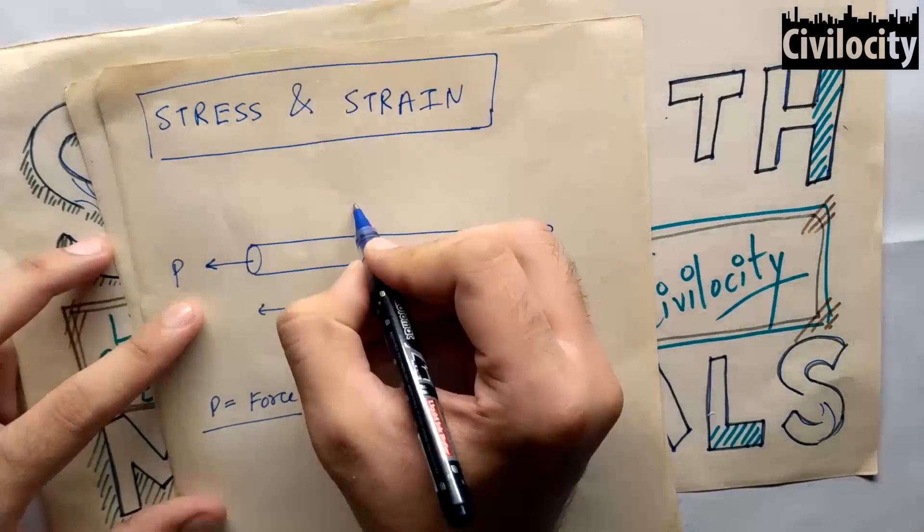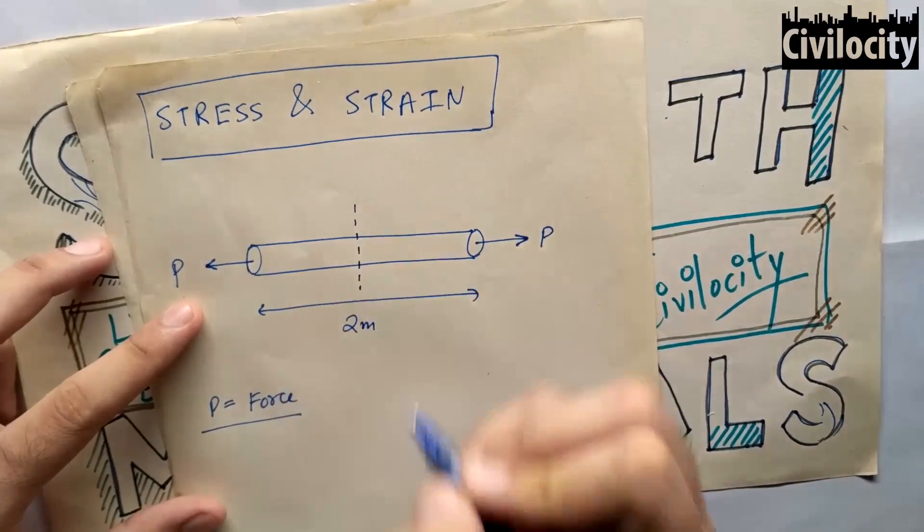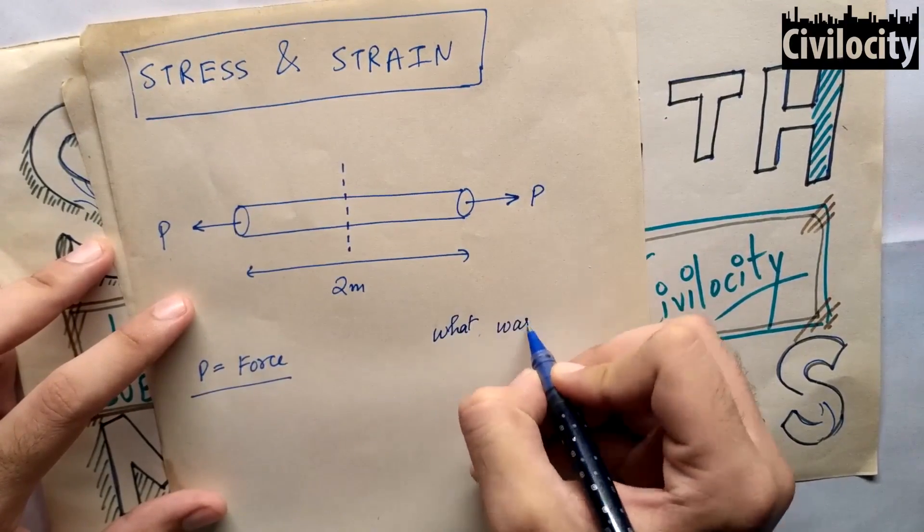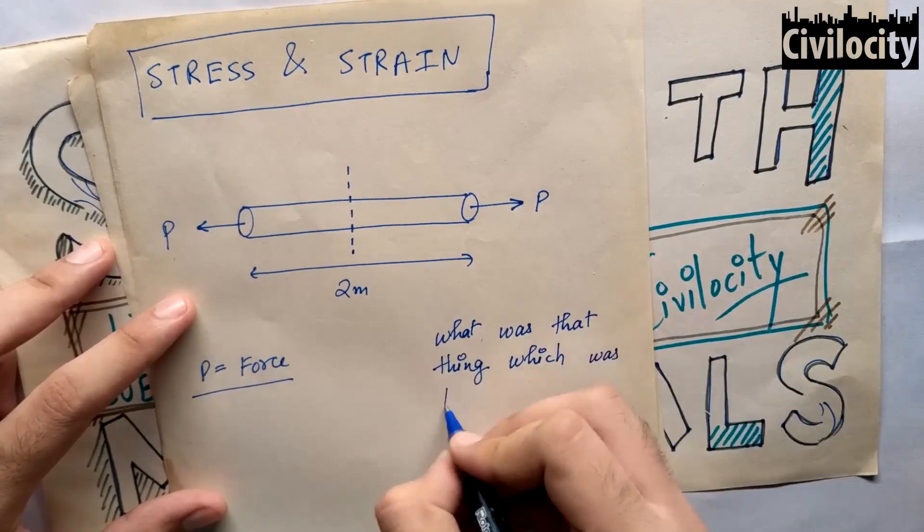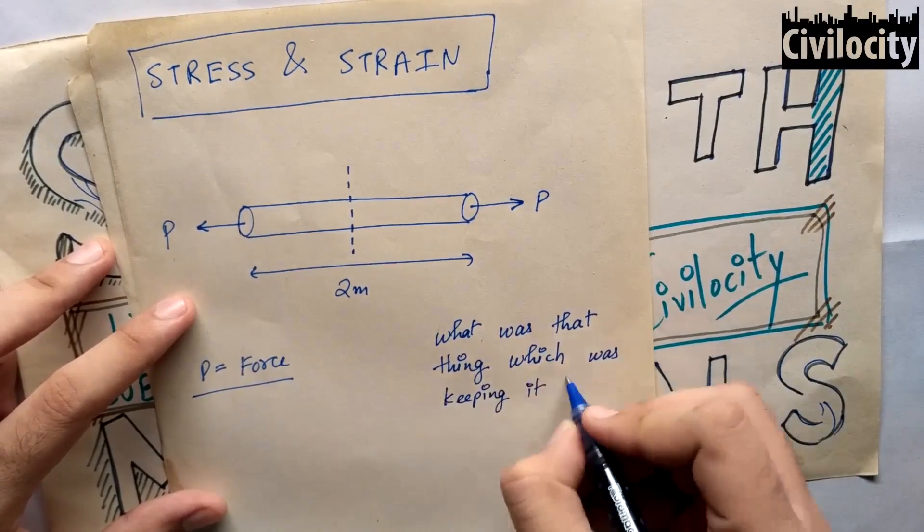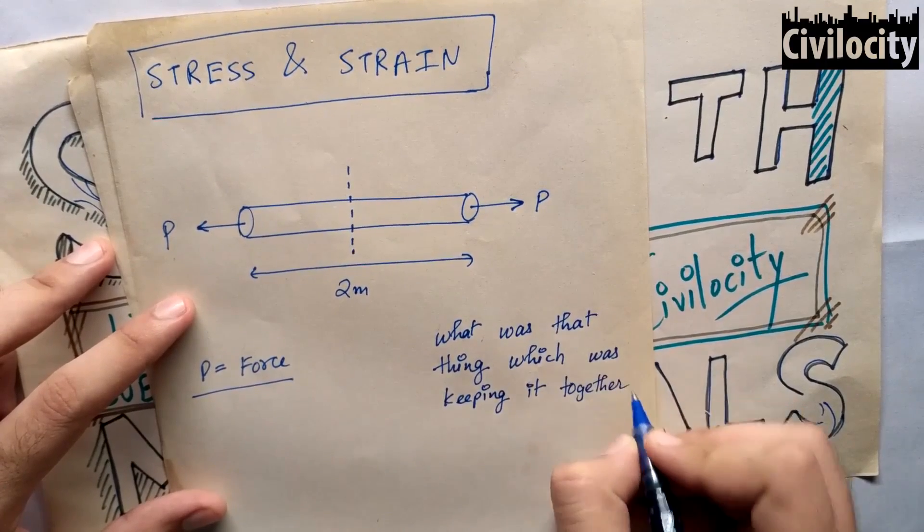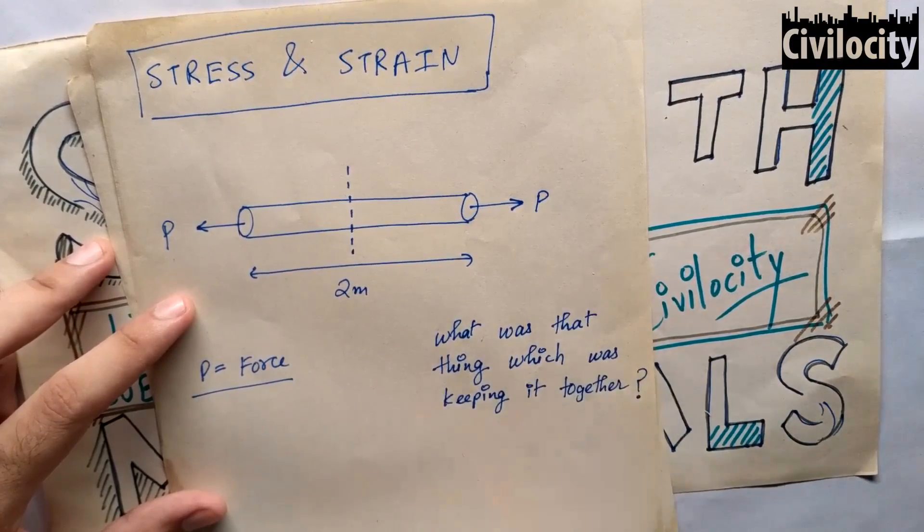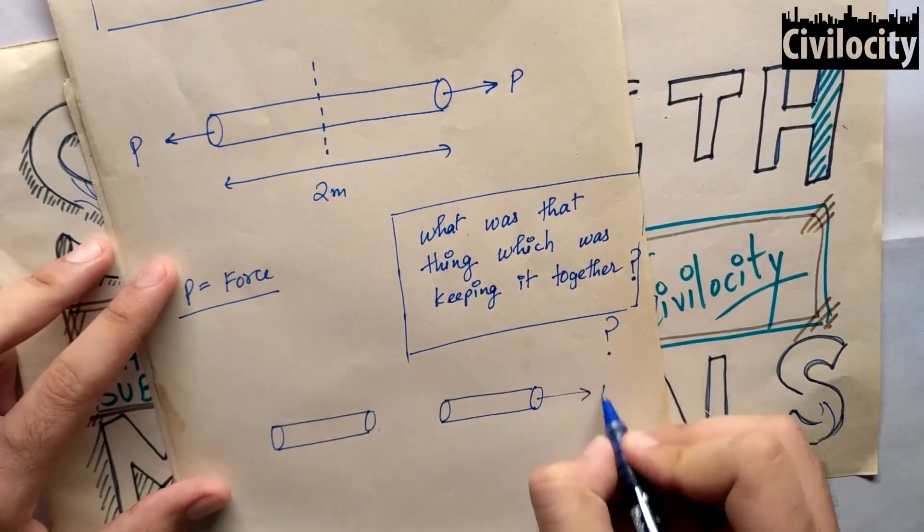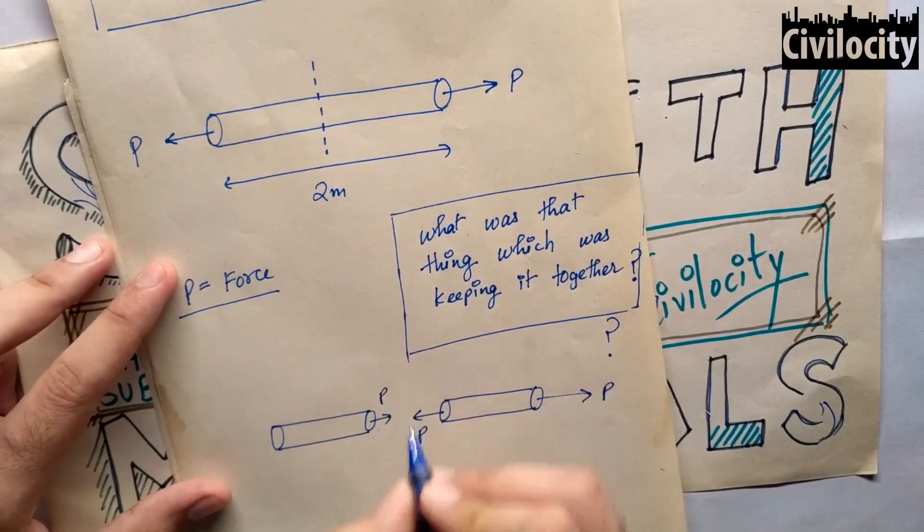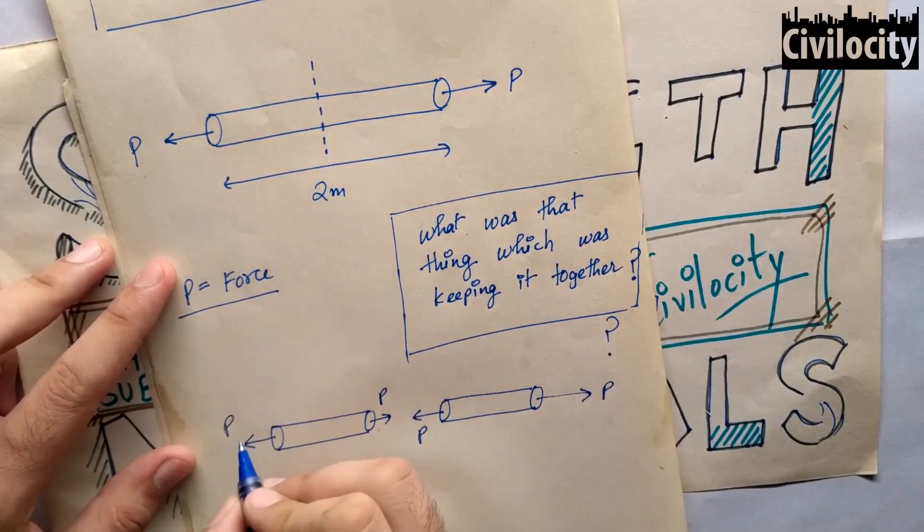After that, while you guys are pulling this bar, I come and cut this bar in half, which makes me think: what was that thing keeping it together? I see there was a force equal and opposite to the force applied by you and your friend on both bars. That was the only force keeping the bar together and away from deformation. Since the bar has some cross-sectional area, the internal force is uniformly distributed over the cross-sectional area.